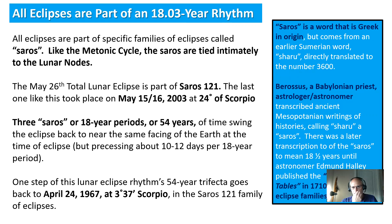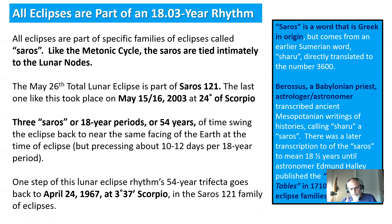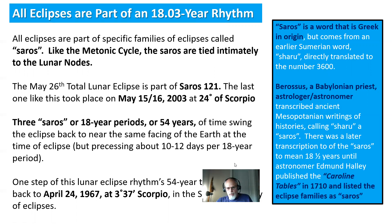Where does Saros come from? It comes from an earlier Sumerian word called Sharu, directly translated to the number 3600. There's a connection to the base-60 numerals that ancient Sumer had, and eclipses and rhythms and patterns, and the word Saros eventually came out of Greece from Sumer. There was a transcription by Edmund Halley, and he recognized the Saros patterns — published in his work called the Carolene Tables in 1710. This is like the first sort of modern part of how that word came about, and eclipse families started to really be noticed more in the modern astronomical field.